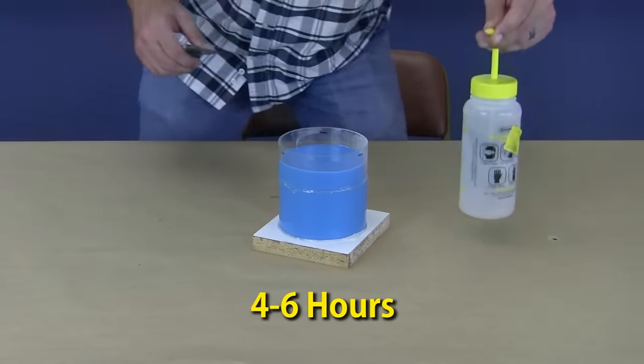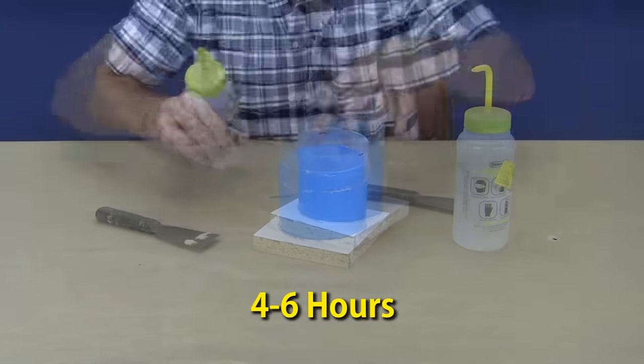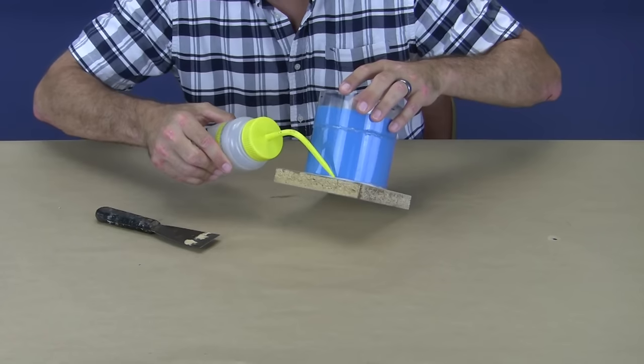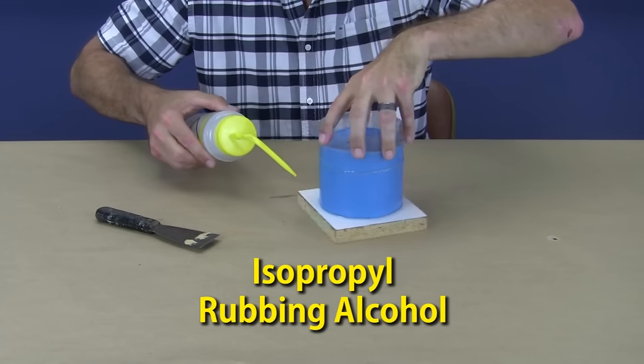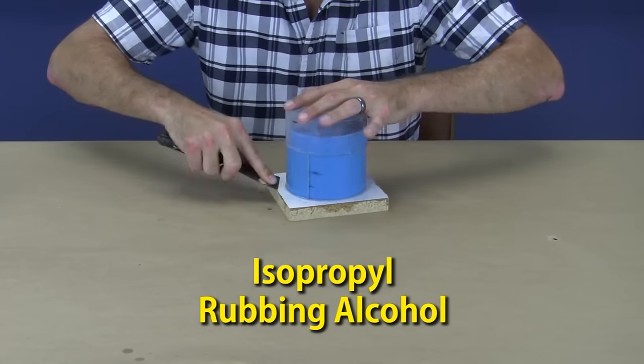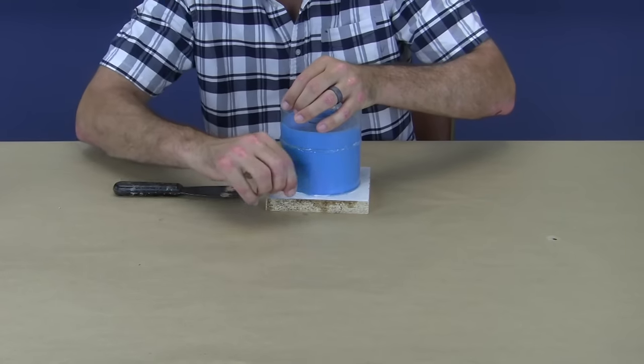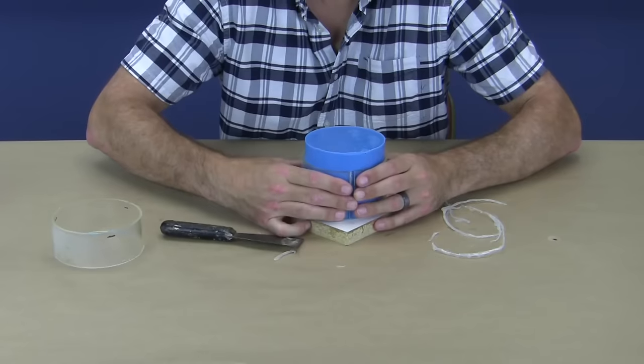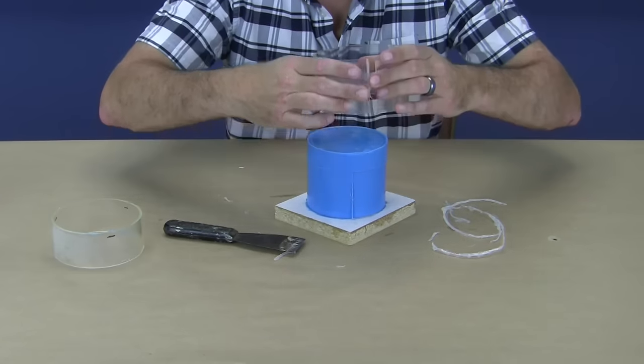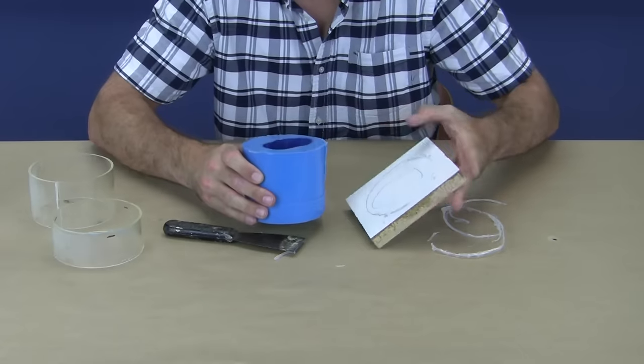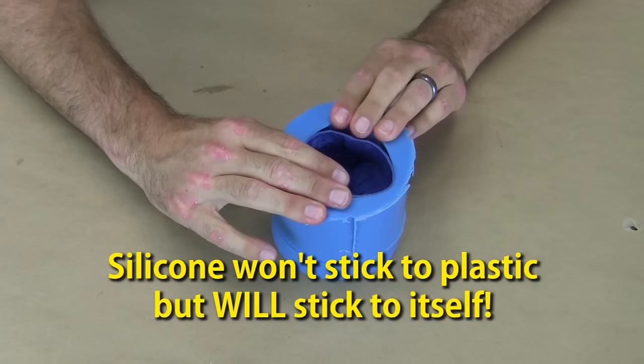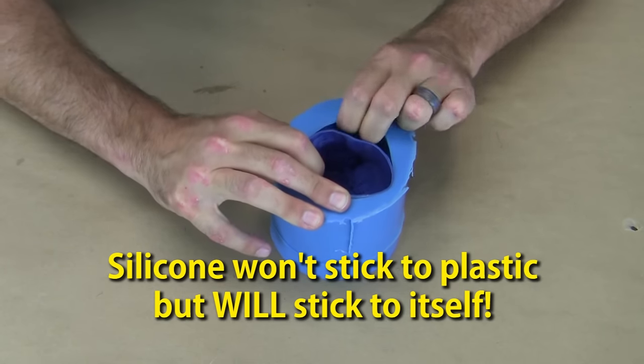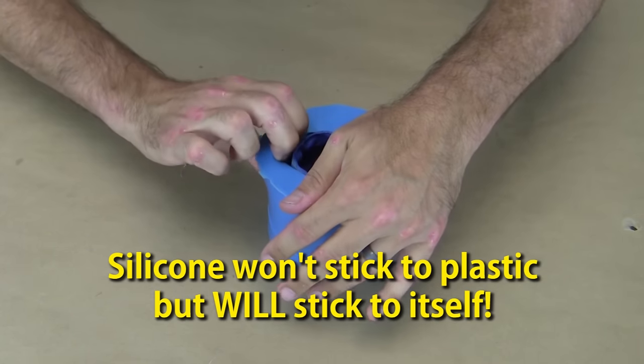After the silicone is cured, we can begin demolding the pattern. As mentioned in our other mold making videos, isopropyl alcohol works great to loosen up the hot glue holding the acrylic pieces in place. Once the hot glue is peeled off and acrylic rings removed, it's time to remove our 3D printed skull from the silicone. The beauty of castable silicone is that it doesn't stick to plastic, which is why we didn't bother with the mold release in this step.